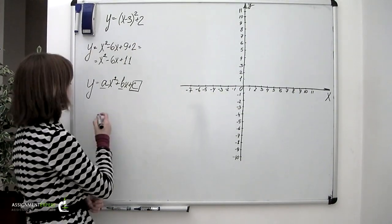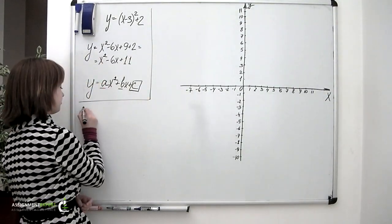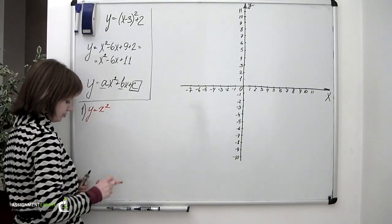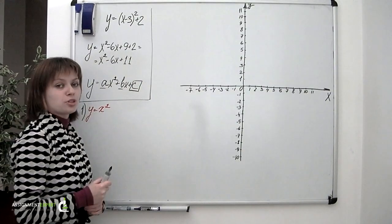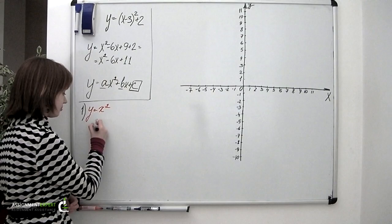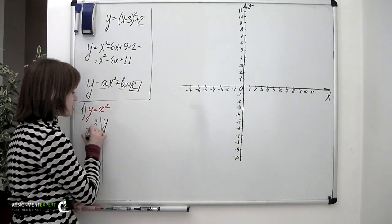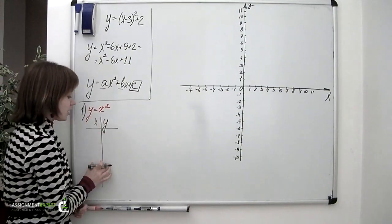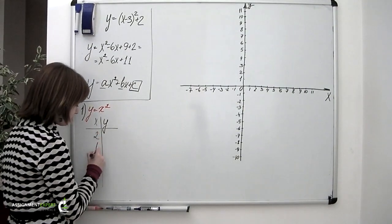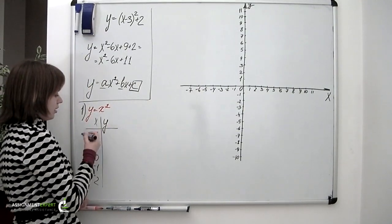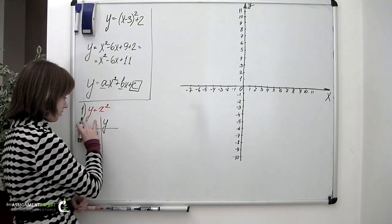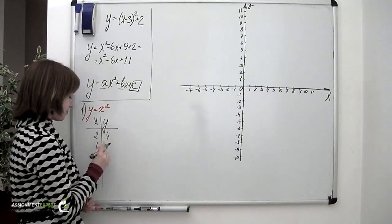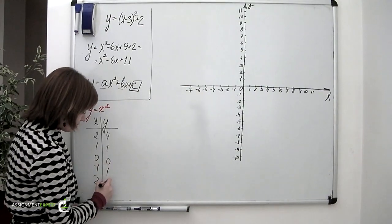Let's now try and graph some parabolas, starting from the most simple example: y equals x squared. To sketch this curve, we need a few points. I'll pick a few values for x — 2, 1, 0, negative 1, negative 2 — substitute them into the equation, and calculate the y's. The results are: 4, because 2 squared is 4; then 1; then 0; then 1 again; and 4 again.